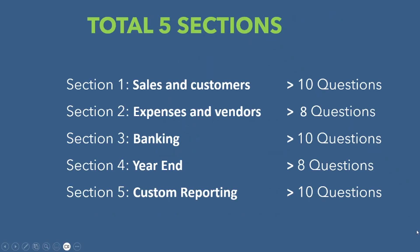There are five sections in this level and each section has different questions. Section 1 Sales and Customers has 10 questions, Section 2 Expenses and Vendors has 8 questions, Section 3 Banking has 10 questions, and Section 4 has 8 questions.